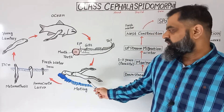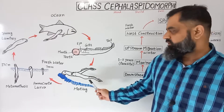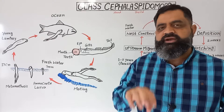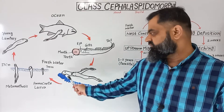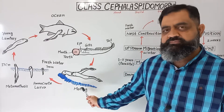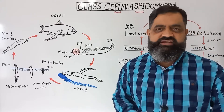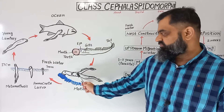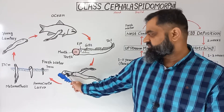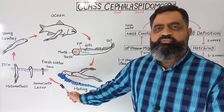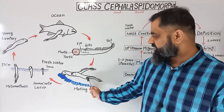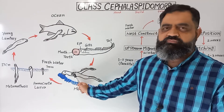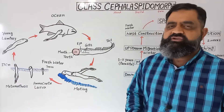This is where they are going to spawn. During this process, these fish prepare a nest on the bed of the river where pebbles and sands are present, and they make tiny holes inside the sand to lay eggs. After making a nest, the female fish attaches itself to a stone with the help of the suctorial mouth, while the male fish attaches to the body of the female fish with the help of the suctorial mouth.